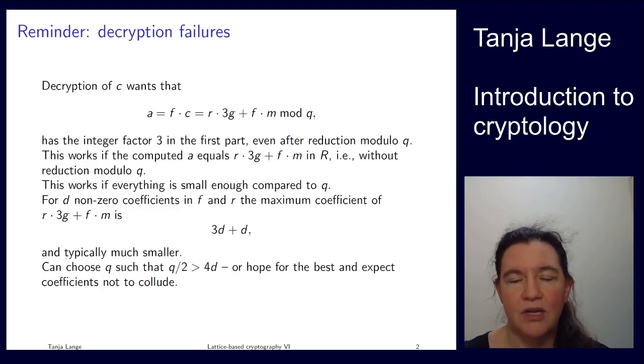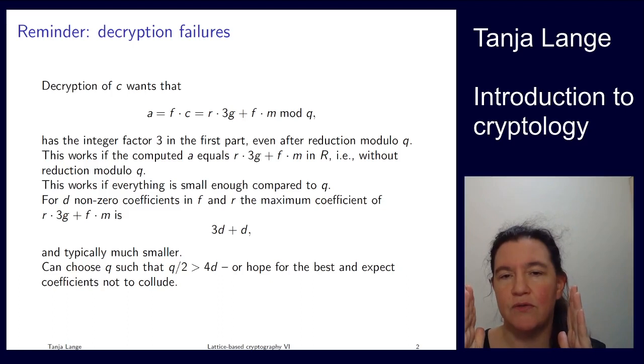So everything is computed in R so we have these reductions modulo x to the n minus 1, but the reduction modulo q doesn't kick in. So if we take this polynomial and put the coefficients between, well, on the lower end minus q over 2, on the higher end plus q over 2.